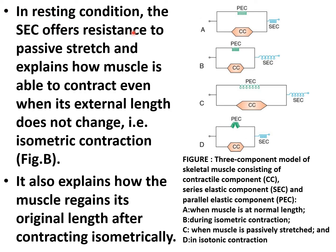In the resting condition, the series elastic component offers resistance to passive stretch and explains how the muscle is able to contract even when its external length does not change — for example, in isometric contraction. It also explains how the muscle regains its original length after contracting isometrically.